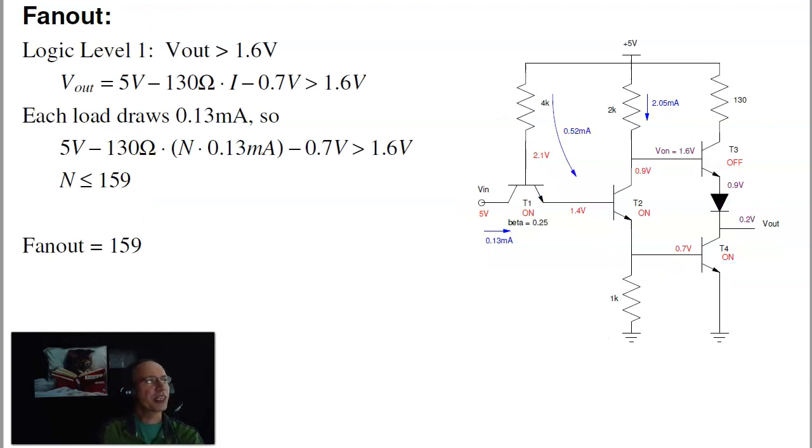In terms of fanout, on logic level 1, as long as the output is more than 1.6 volts, each gate draws 0.13 milliamps. That 0.13 milliamps comes through this 130 ohm resistor. So the voltage right here is 5 minus 130 times the number of gates times 0.13 minus 0.7. That's got to be bigger than 1.6 volts. Solving gives you 159. That's a big advantage of TTL logic. Before I had a fanout of 4. Now I've got a fanout of 159.